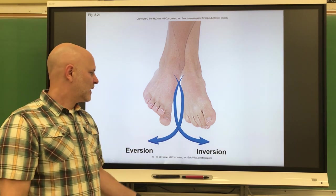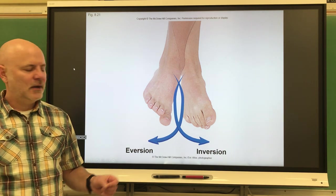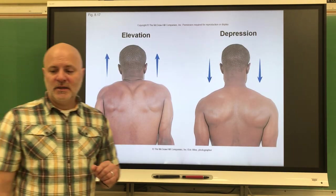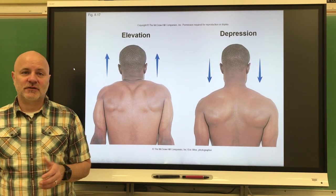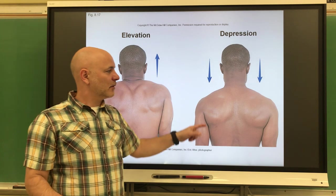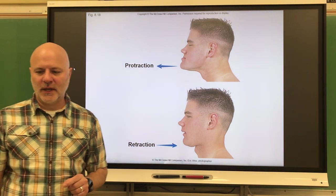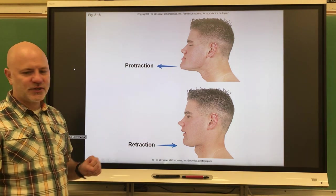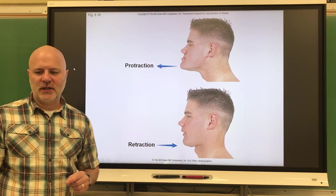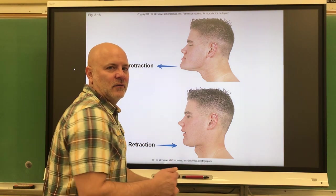For the feet, eversion is a turning of the foot so the sole faces laterally, and inversion is turning the foot so the sole faces medially. Next, elevation is a raising of a body part, and depression is a lowering of a body part — such as raising and lowering the shoulders. Protraction is moving a part forward; retraction is moving a part backwards.